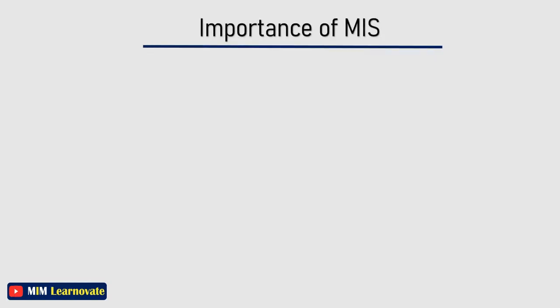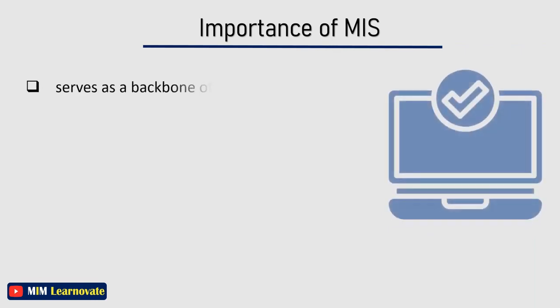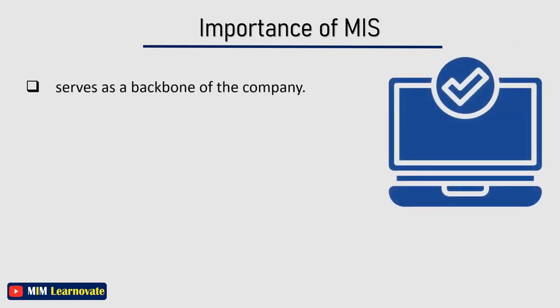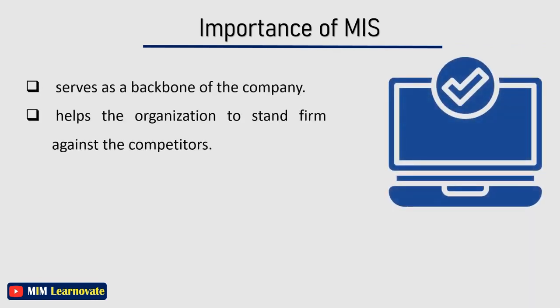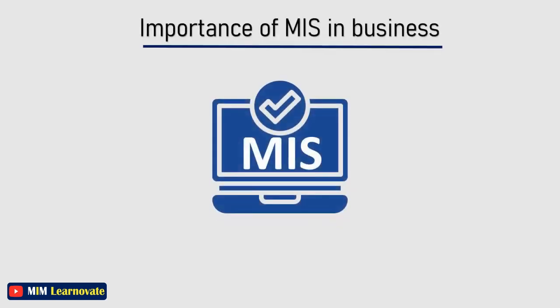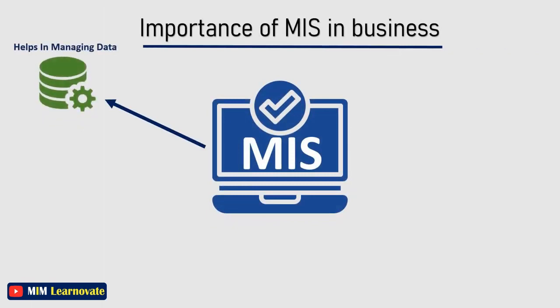Now let's study why management information systems are important for organizations. MIS serves as a backbone of the company and it helps the organization to stand firm against competitors. MIS helps in maintaining and managing crucial business data for assisting in complex decision making by the management. Critical information is stored in an organized manner and can be accessed by the administration quickly whenever required.